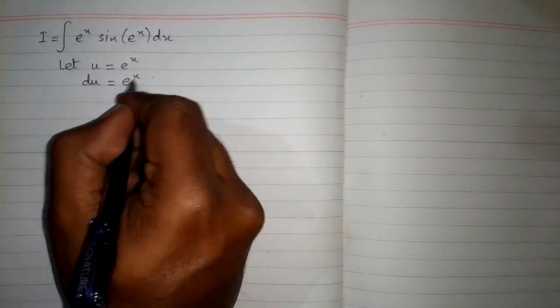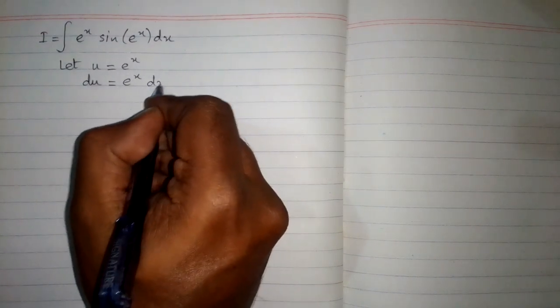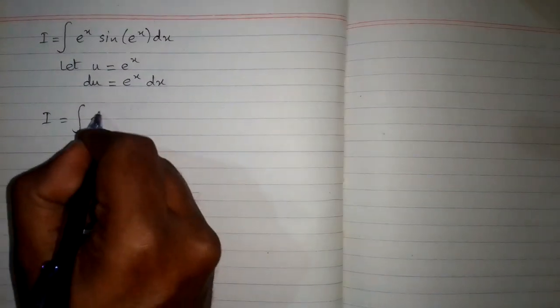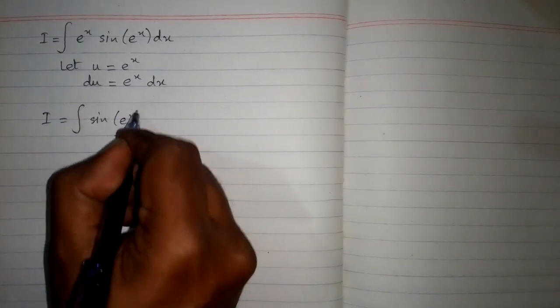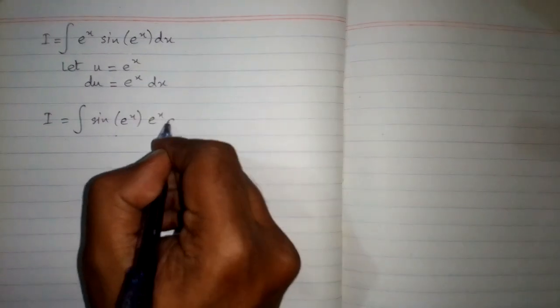The differential du equals the derivative of e^x, which is e^x multiplied by dx. Now the integral I can be written as the integral of sin(e^x) times e^x dx.